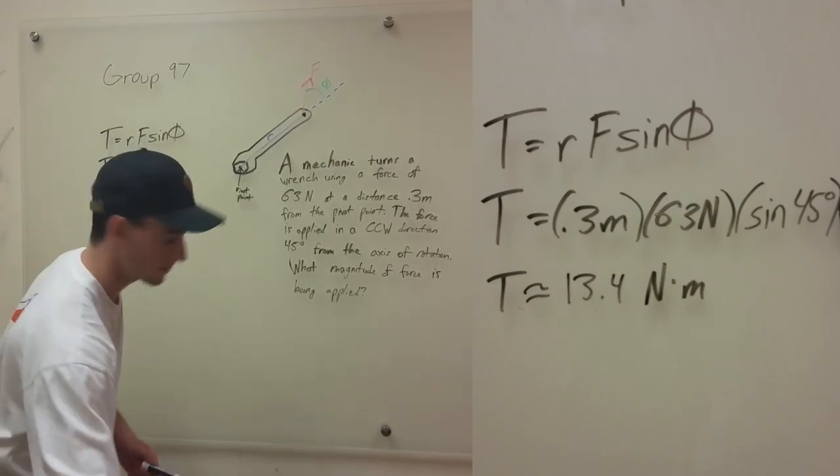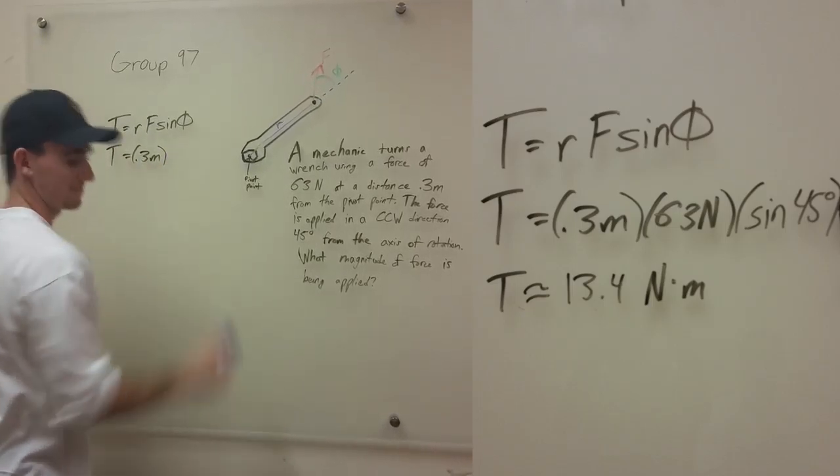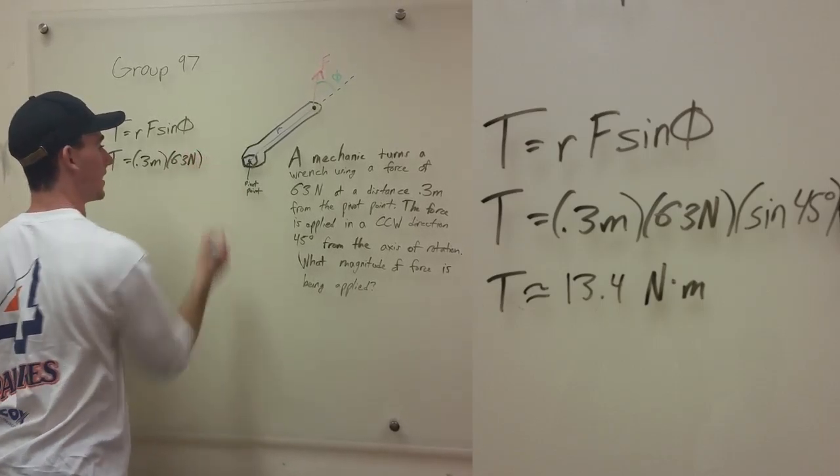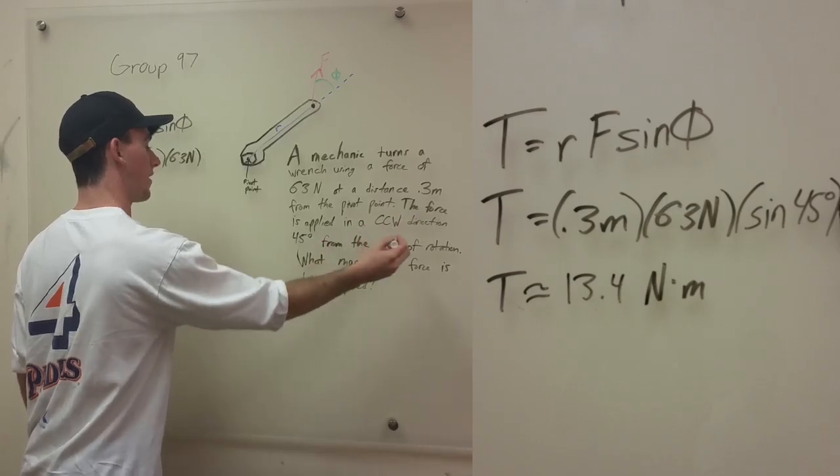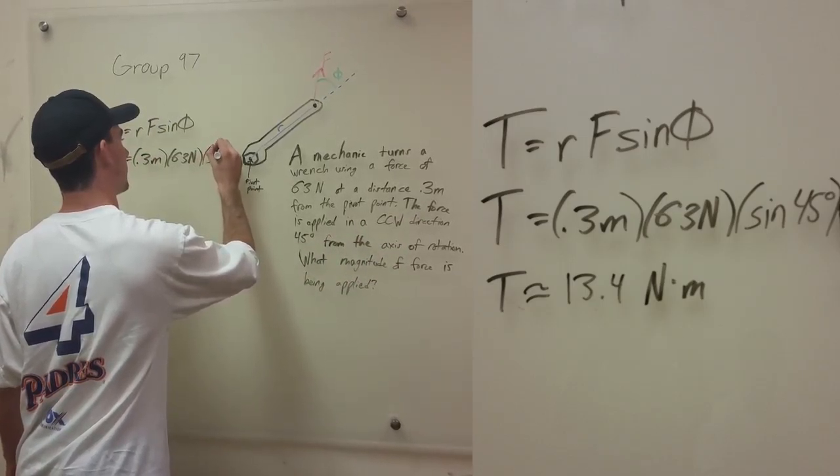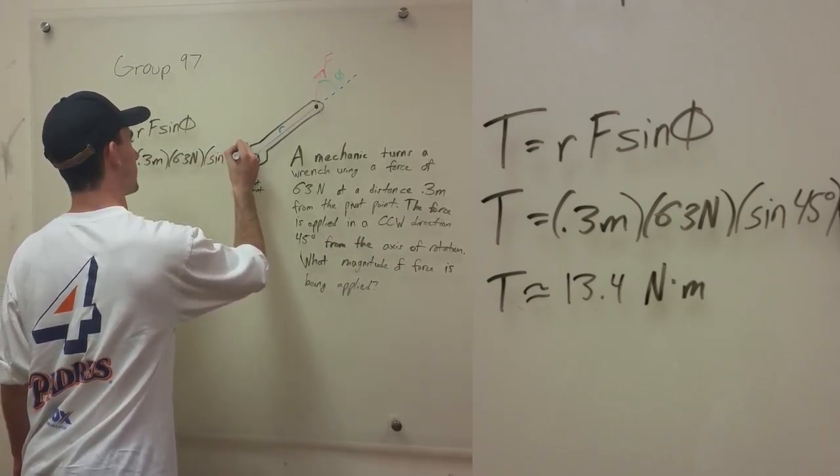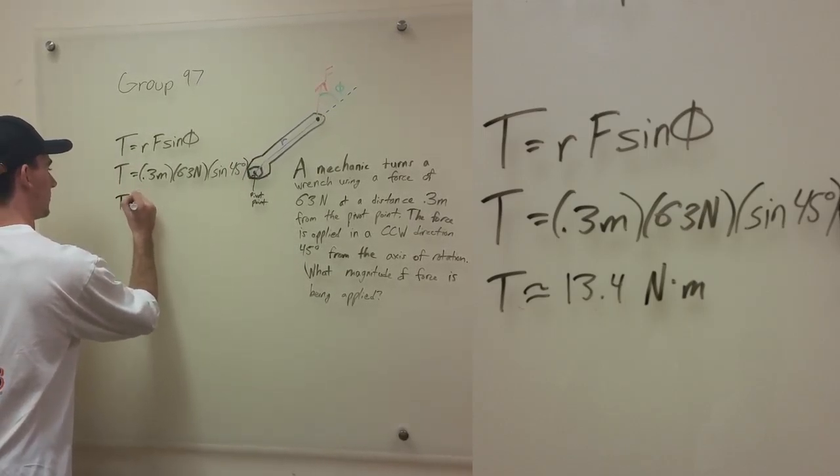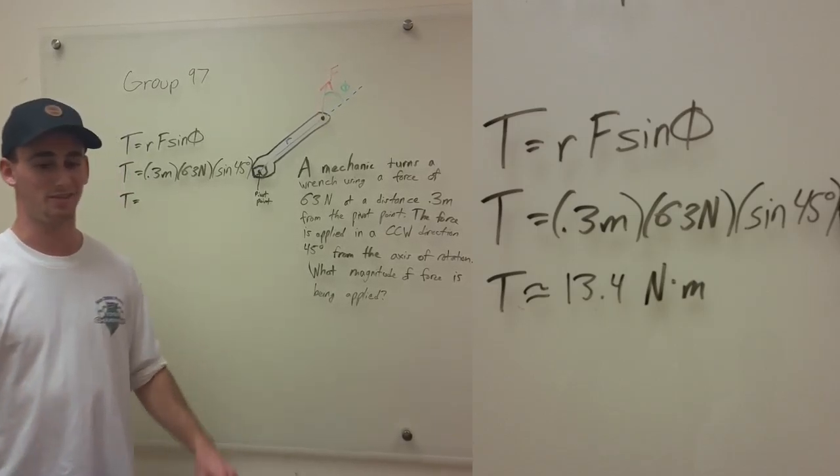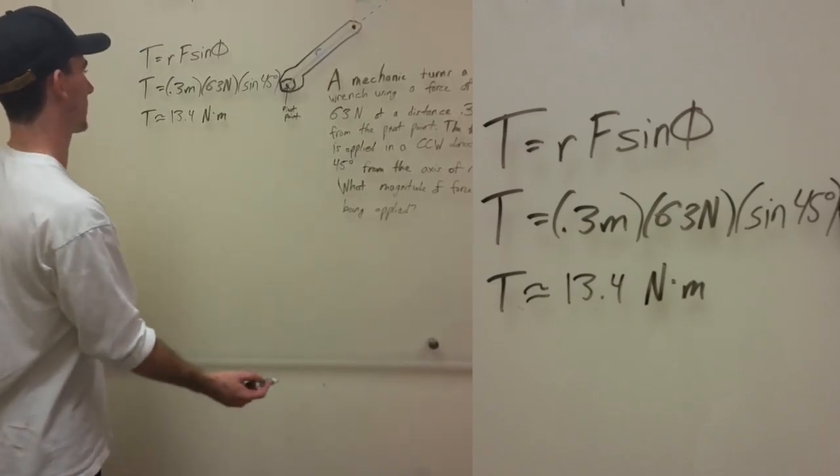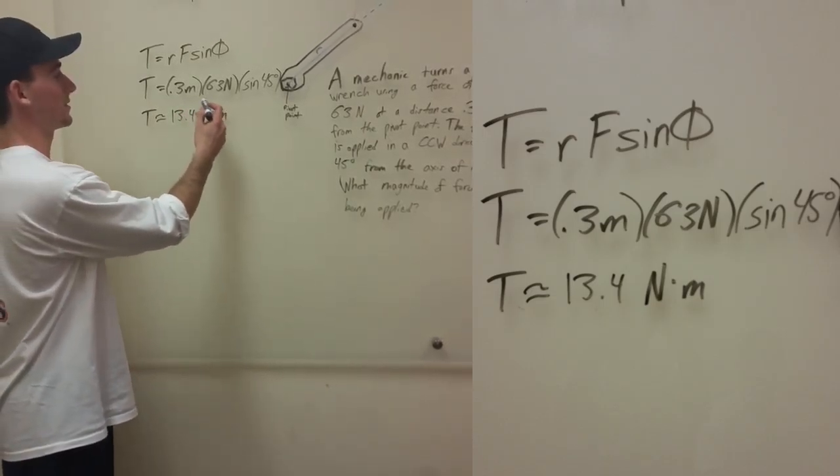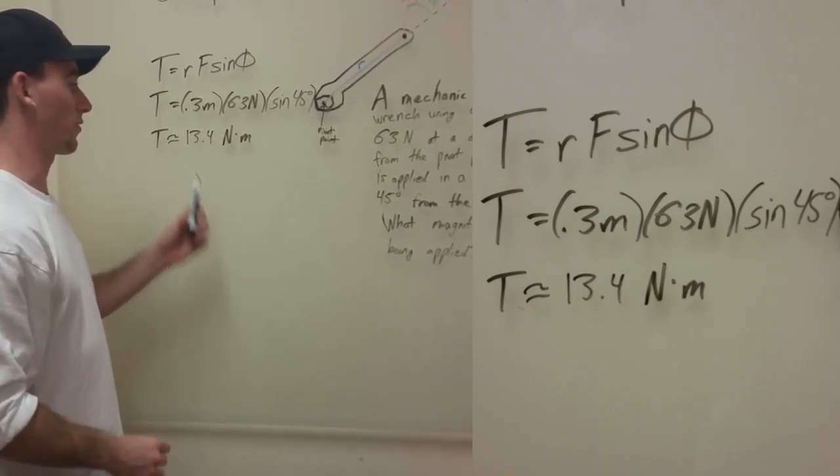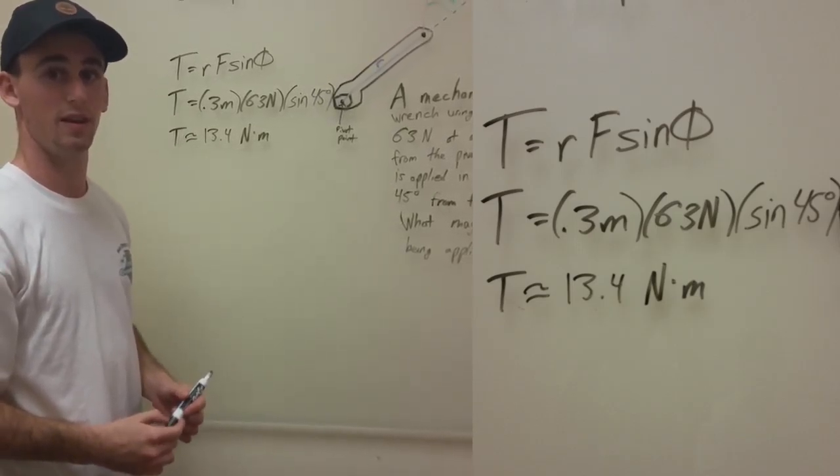So using the equation, I'm going to erase that really quick. We have torque equals, and then we see the distance from the pivot point, which is going to be R. We have this 0.3 meters. We have a force being applied of 63 newtons. And then we have an angle 45 degrees from the axis of rotation. That is going to be sine of 45 degrees.